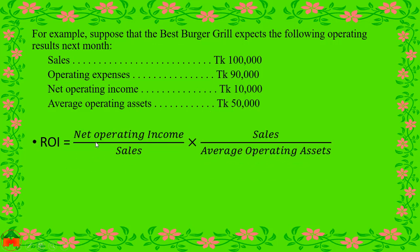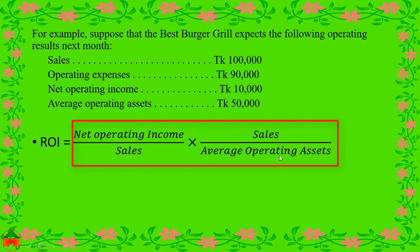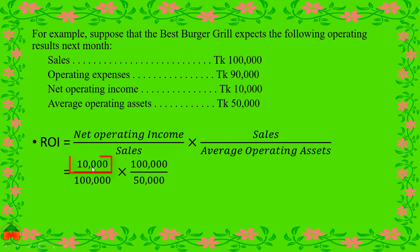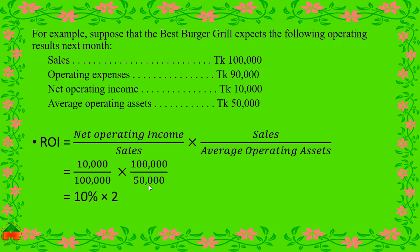Using the broad formula — net operating income divided by sales, multiplied by sales divided by average operating assets — we get: 10,000 ÷ 100,000 = 10% (margin), and 100,000 ÷ 50,000 = 2 (turnover). Multiplying these gives ROI = 20%. The higher the ROI, the better the performance.